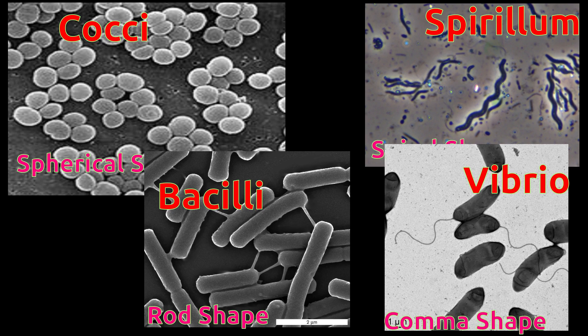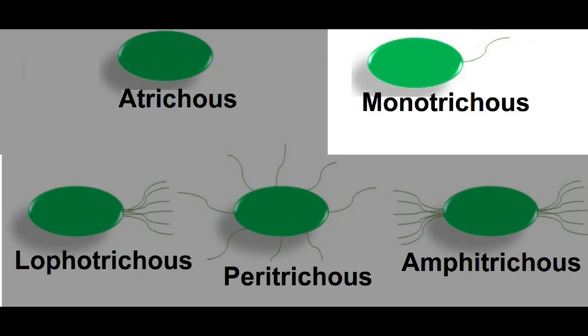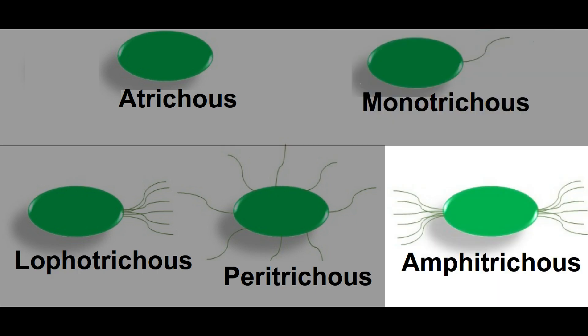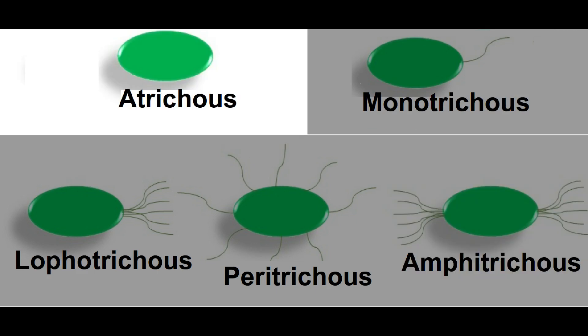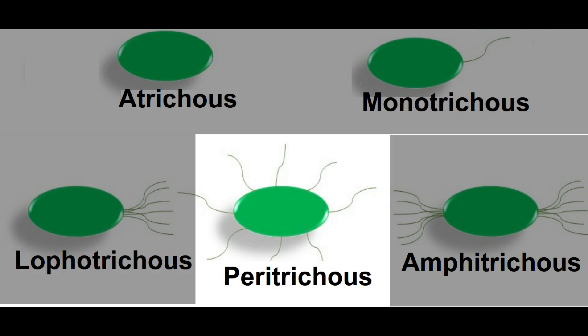In addition to shape, bacteria are also classified into five categories based on number of flagella. We have already learned that flagella help in movement. Bacteria with a single flagellum at one end are called monotrichous. Bacteria with a tuft or group of flagella arising on both ends are called amphitrichous. Bacteria without any flagella are called atrichous. Bacteria with a tuft or group of flagella at one end are called lophotrichous. Bacteria with flagella all around the body are called peritrichous.